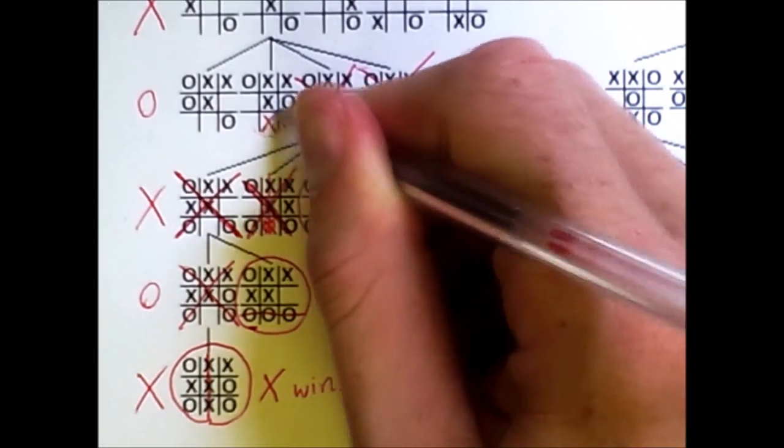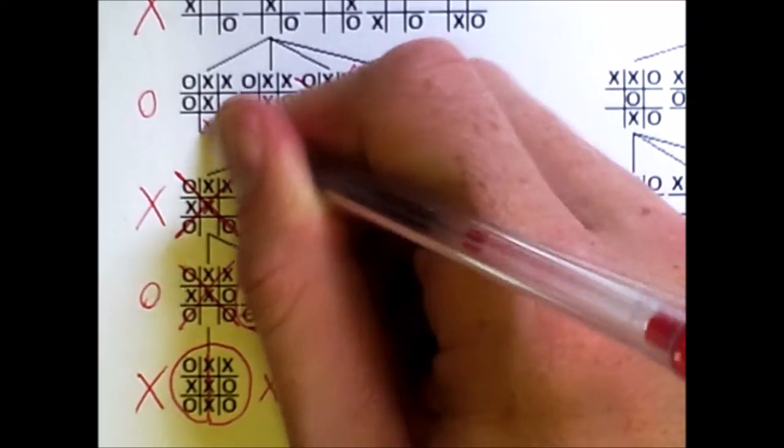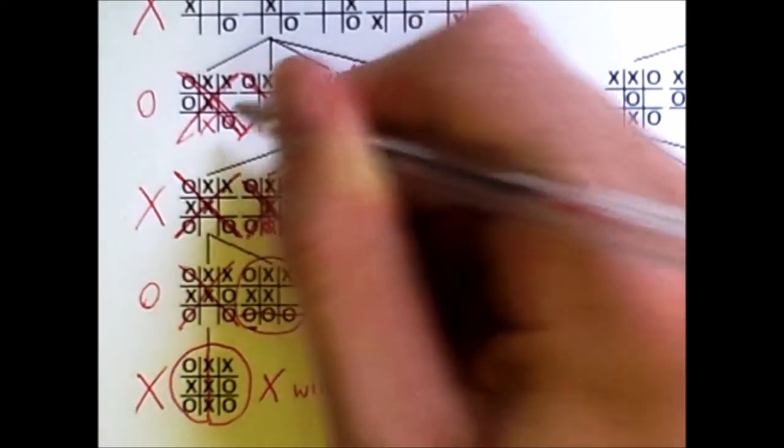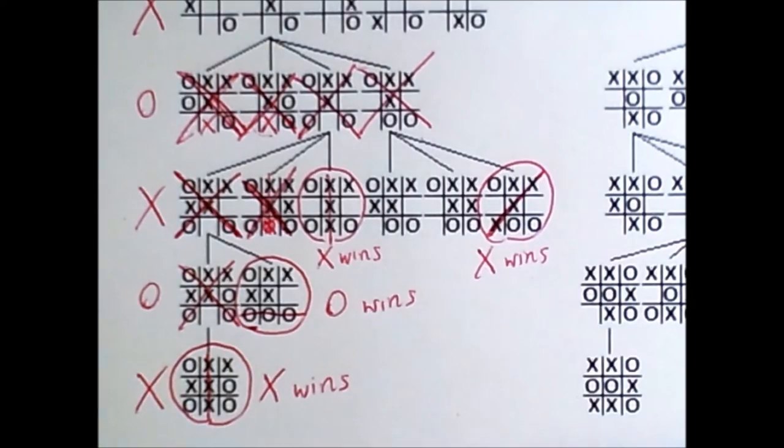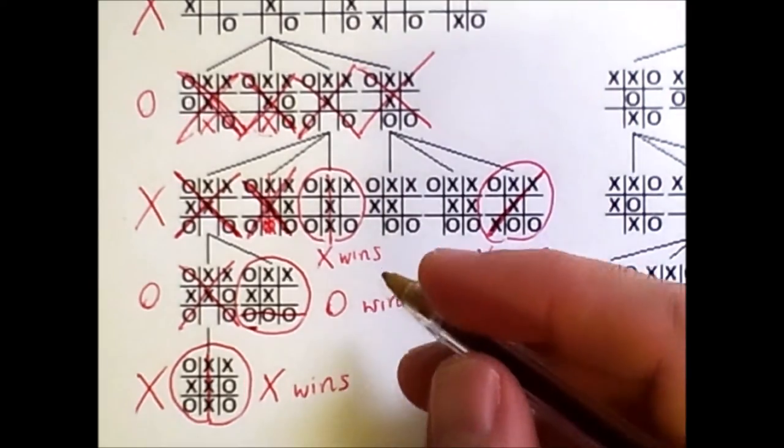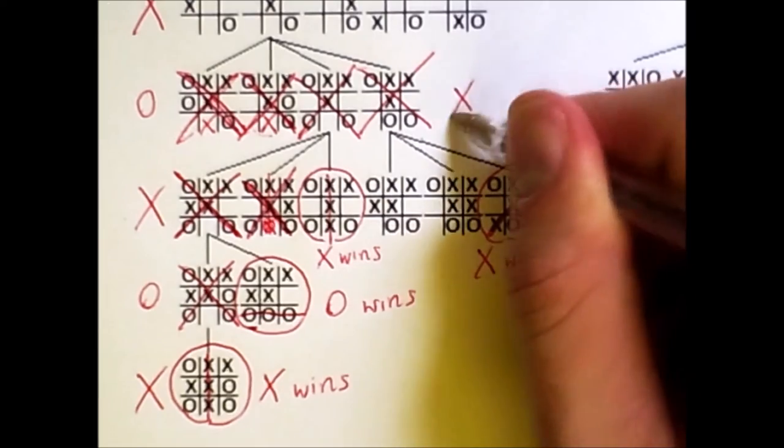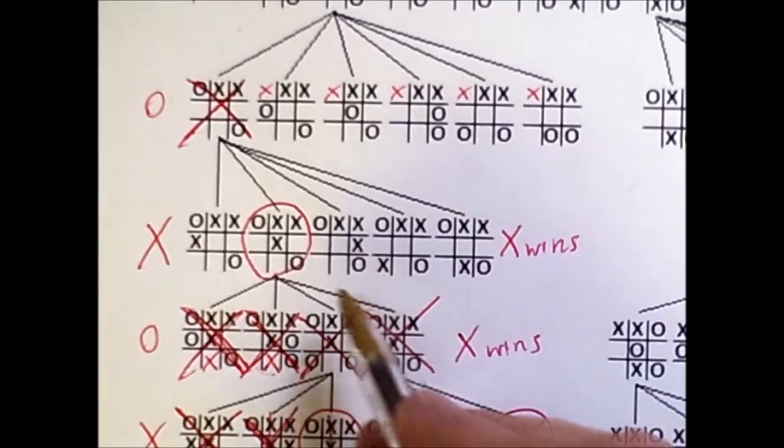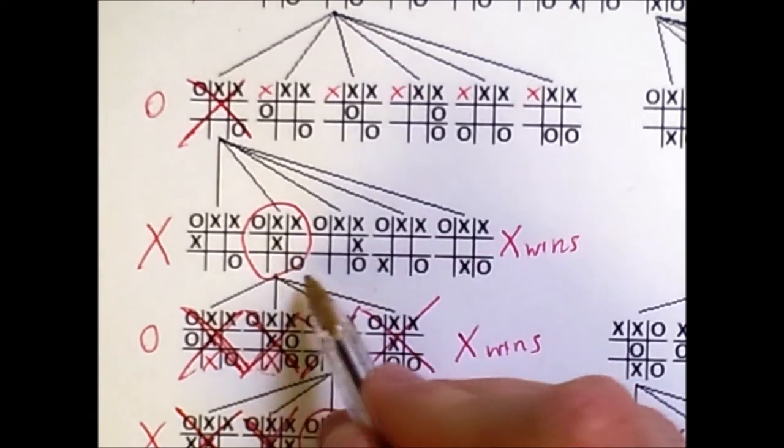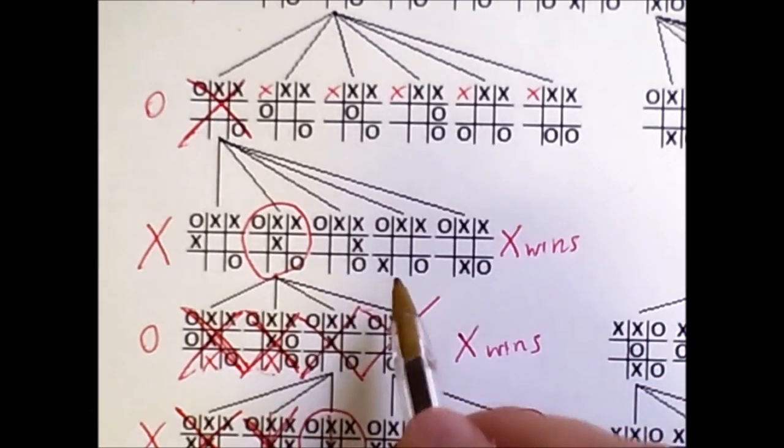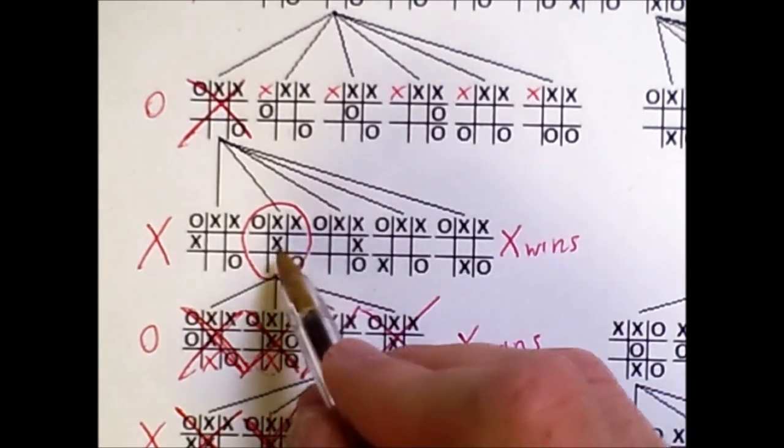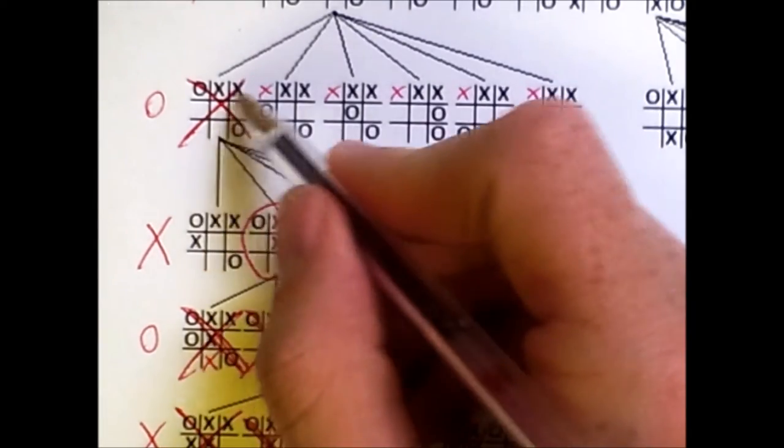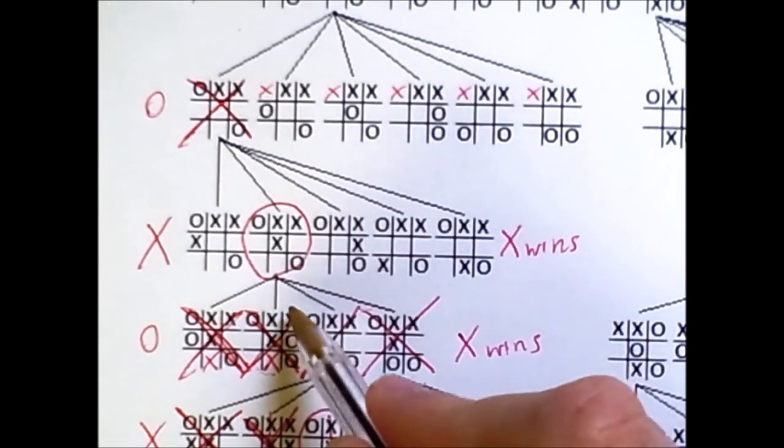Unfortunately for O, X can win easily in all of these states because if O goes to either of these states, X is still one move away from winning. So, O doesn't like any of these states. That means that X wins at this level no matter what happens. Therefore, X loves this state. He doesn't even really need to look at the others, but we'll get into those details later. Therefore, X wins at this level of the tree.